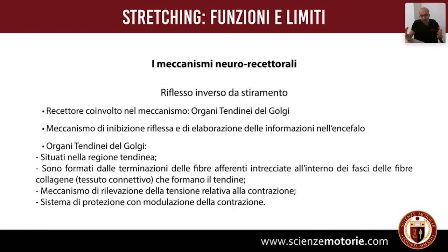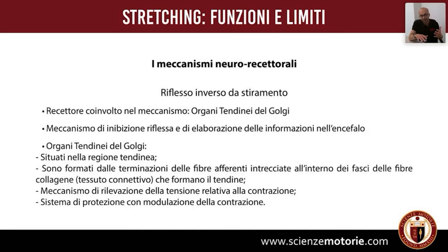Un esempio è la stimolazione sulle tavolette propriocettive: il riarrangiamento e il riadattamento costante a cui è sottoposto il soggetto nelle esercitazioni di controllo propriocettivo in ambito posturologico e sportivo vede le continue modulazioni articolari — come quella della tibiotarsica — relative ai fusi neuromuscolari a livello riflessogeno, mentre la presa di coscienza dei cambiamenti di bascule è da attribuire agli organi tendinei del Golgi.